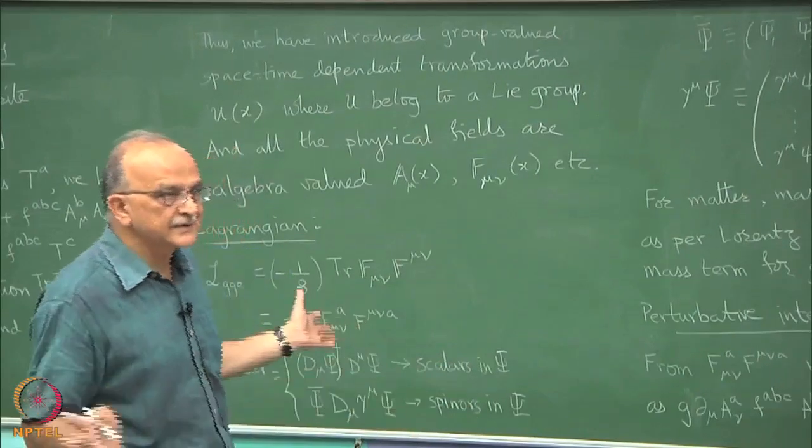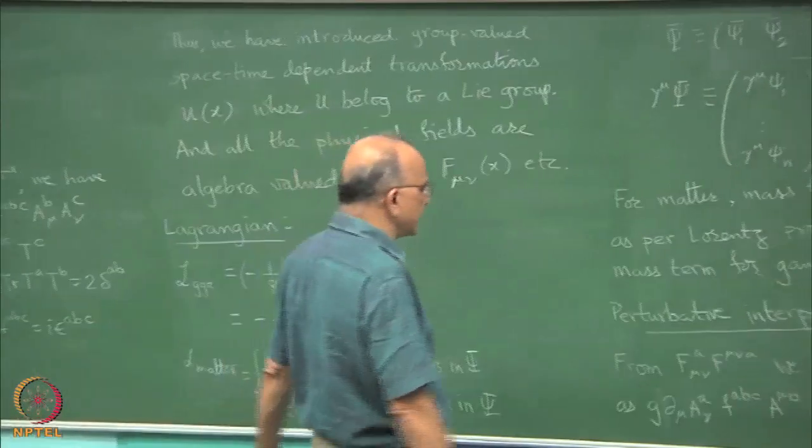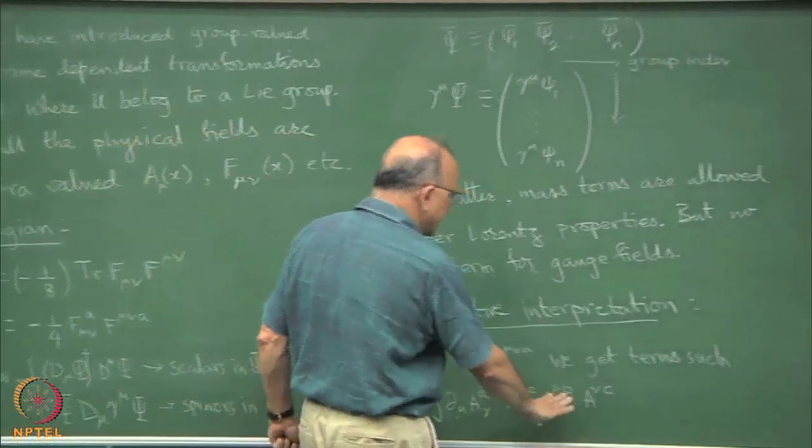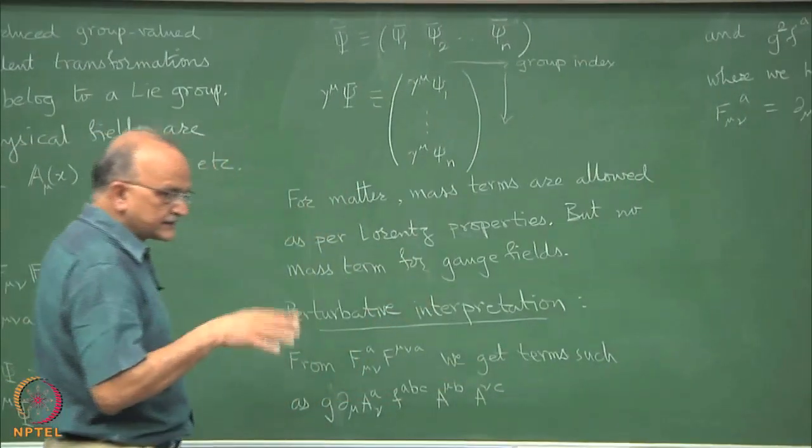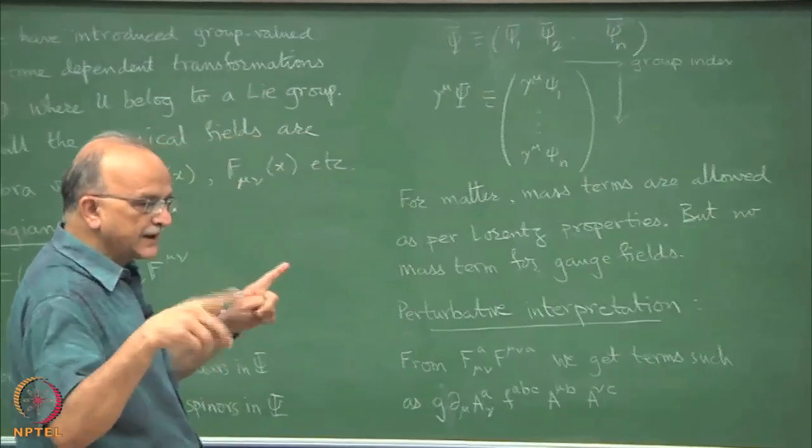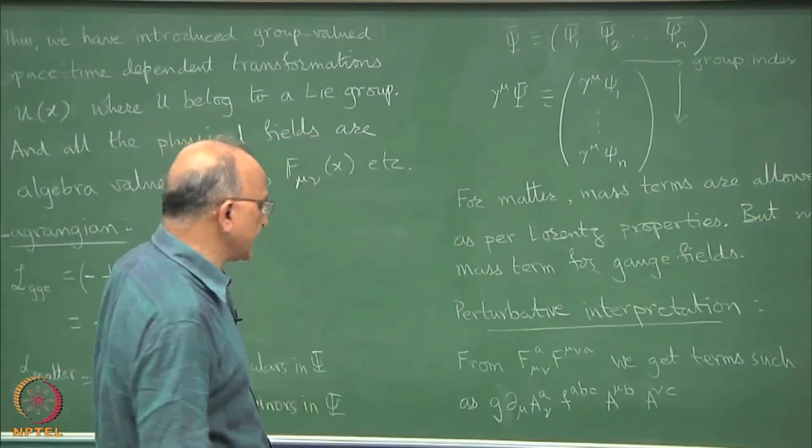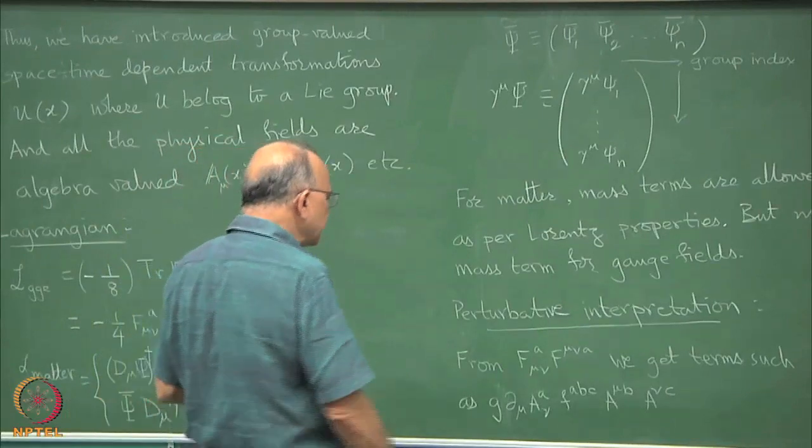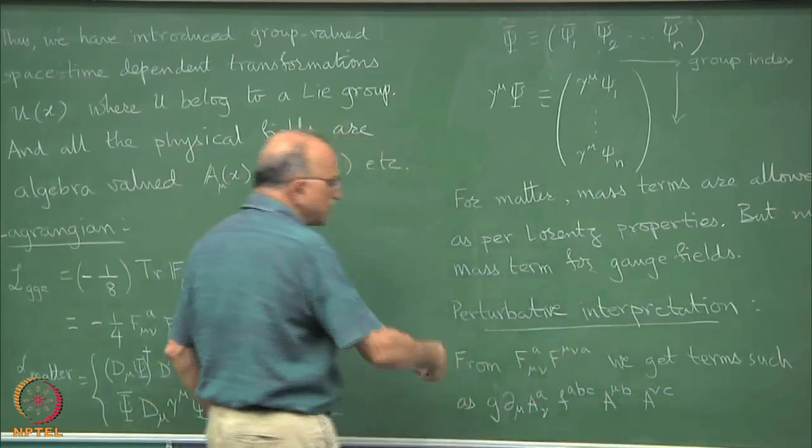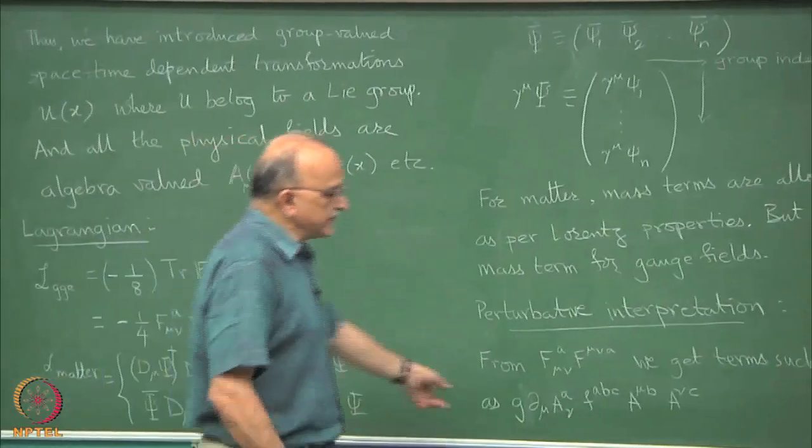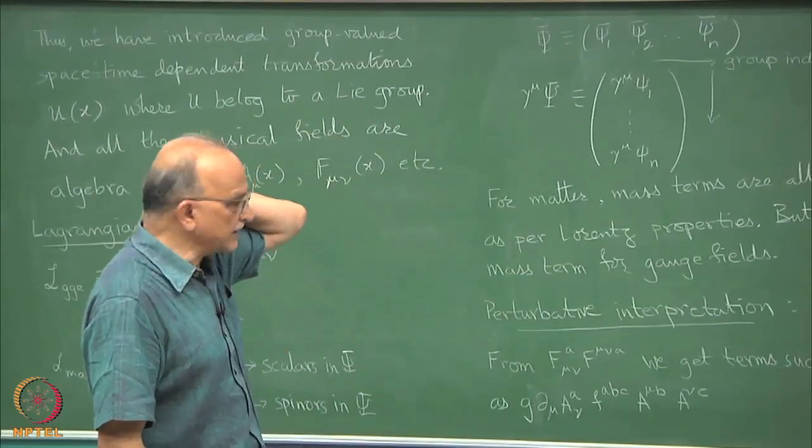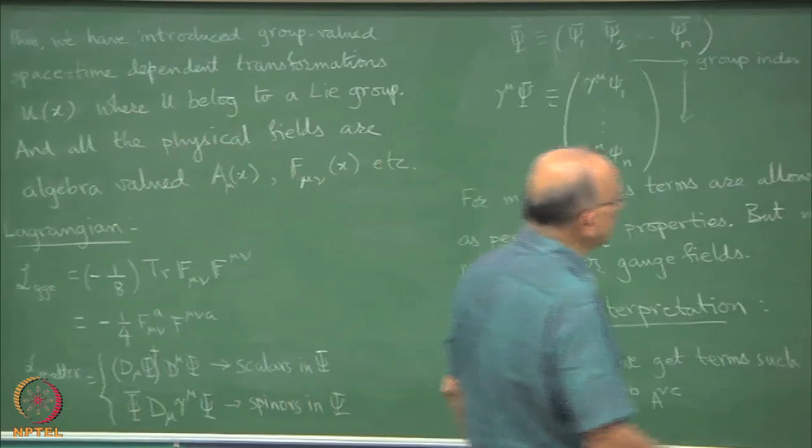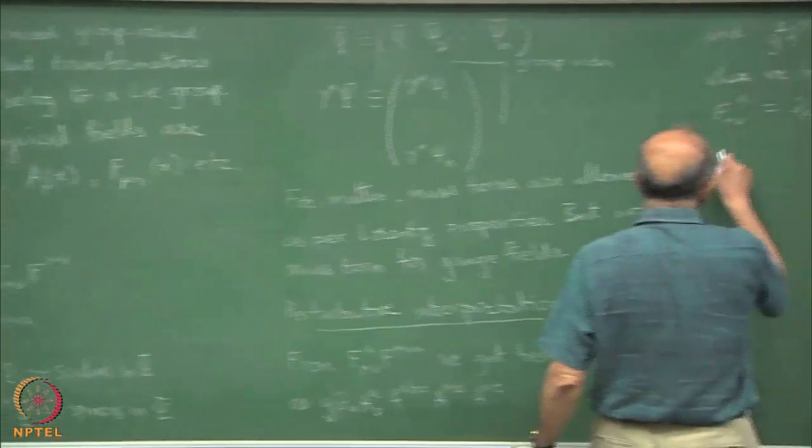It is a package deal in which interactions, if you want to think of the A mu as the elementary potentials which you quantize by saying A and pi A commutator equal to ih cross, then those quanta are automatically forced to be interacting. You do not have a theory of free quanta, free non-abelian quanta. There is no such thing.